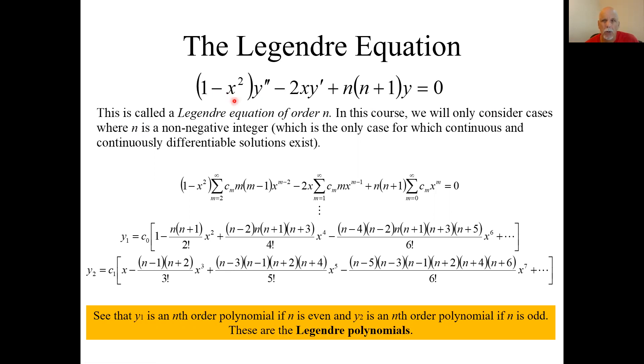Divide through by this (1-x²) and you'll see that zero is an ordinary point, and that x equals plus or minus one are the singular points. So that tells us we can find two linearly independent power series solutions to this equation, and the interval of convergence will be plus and minus one, from minus one to plus one.